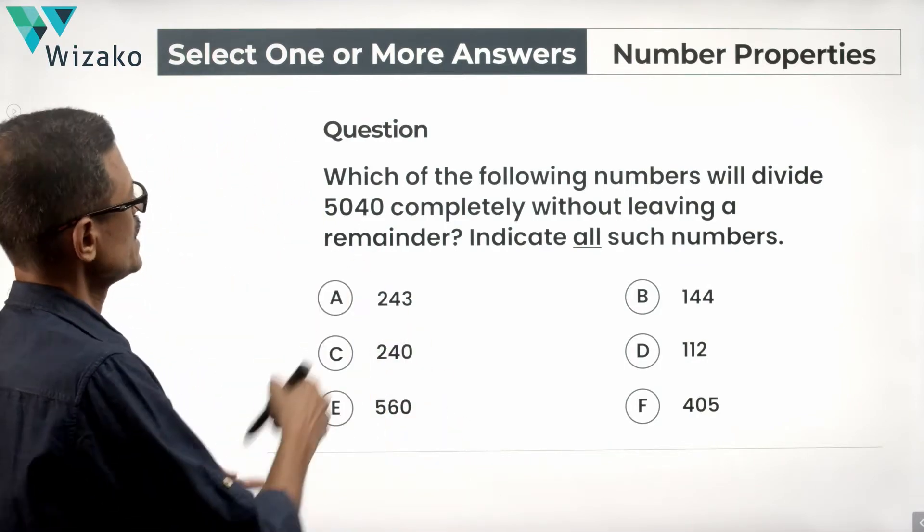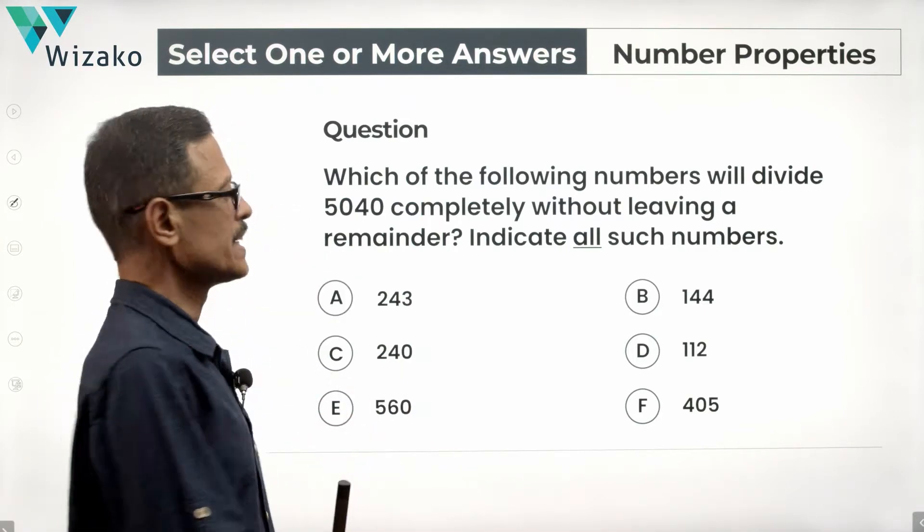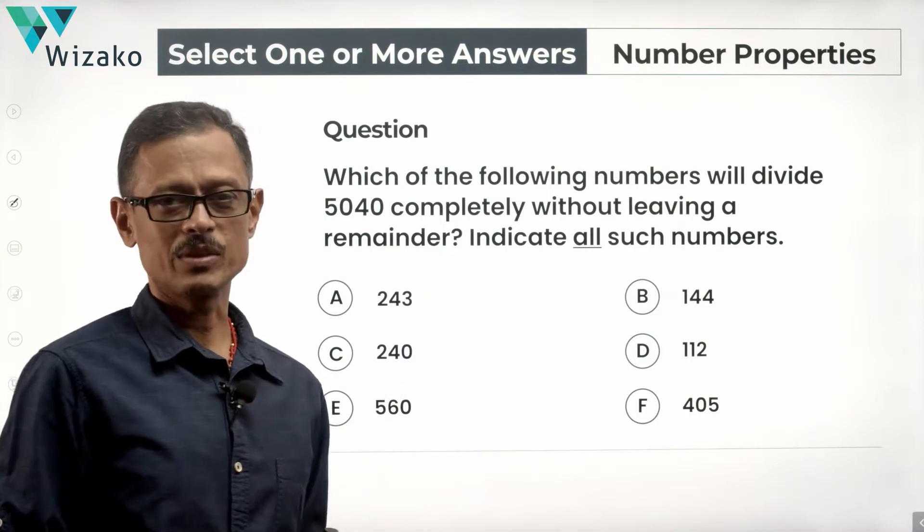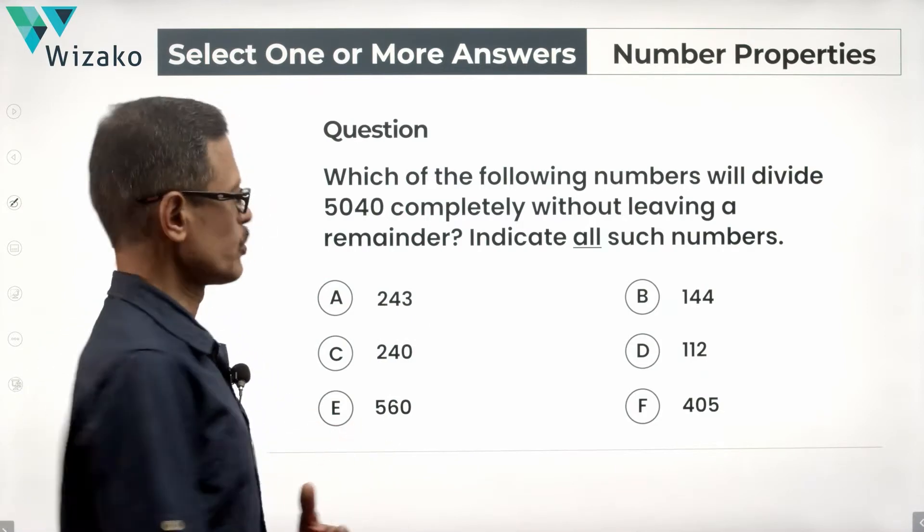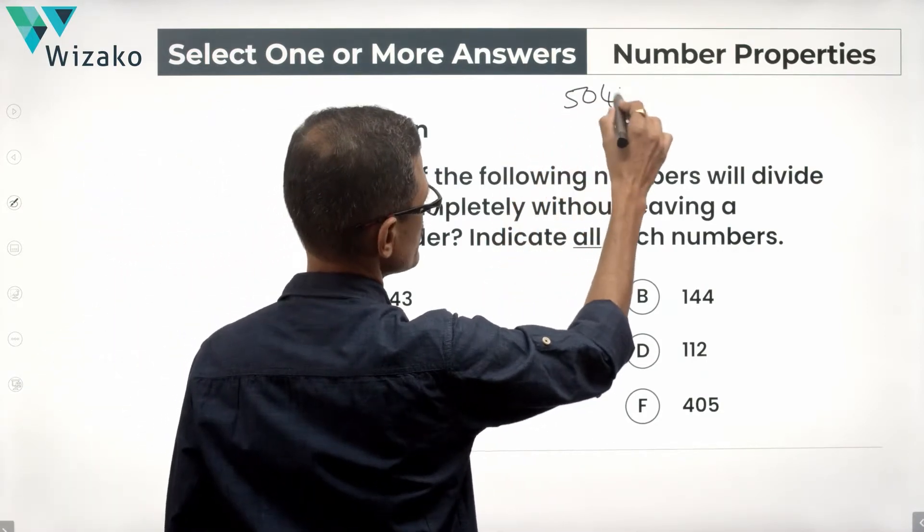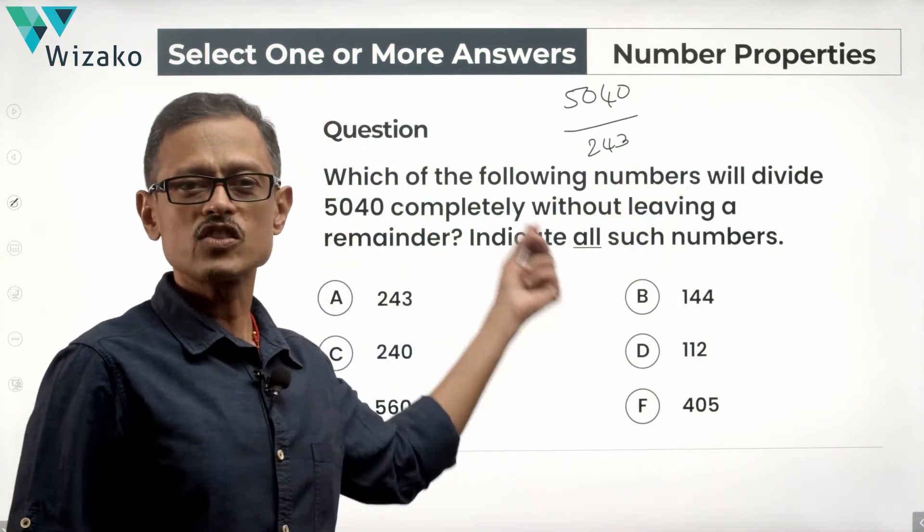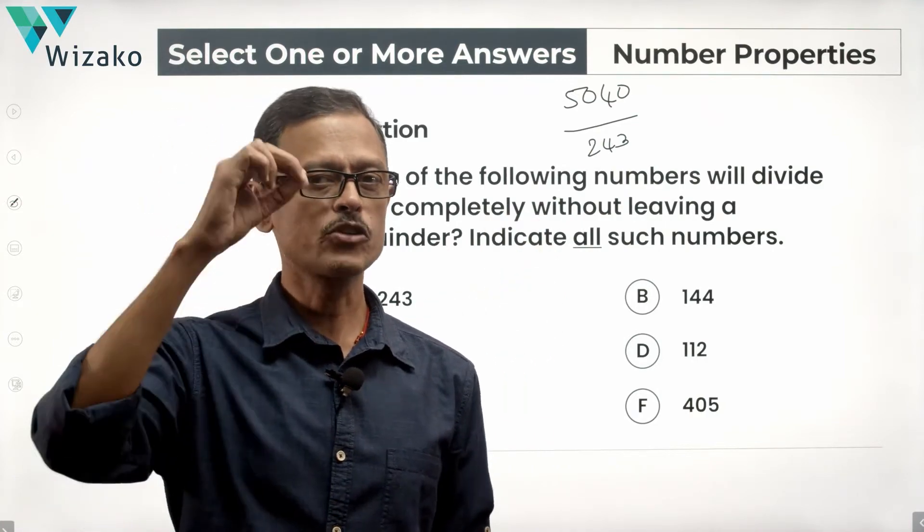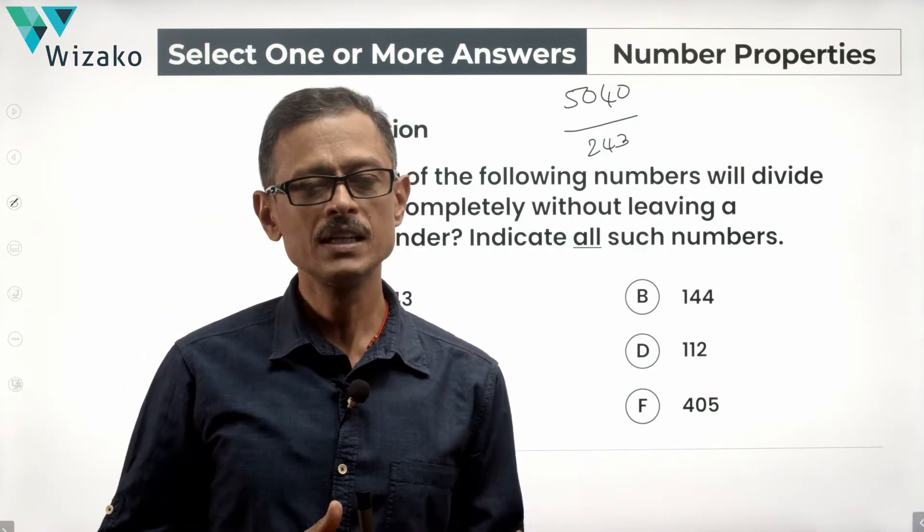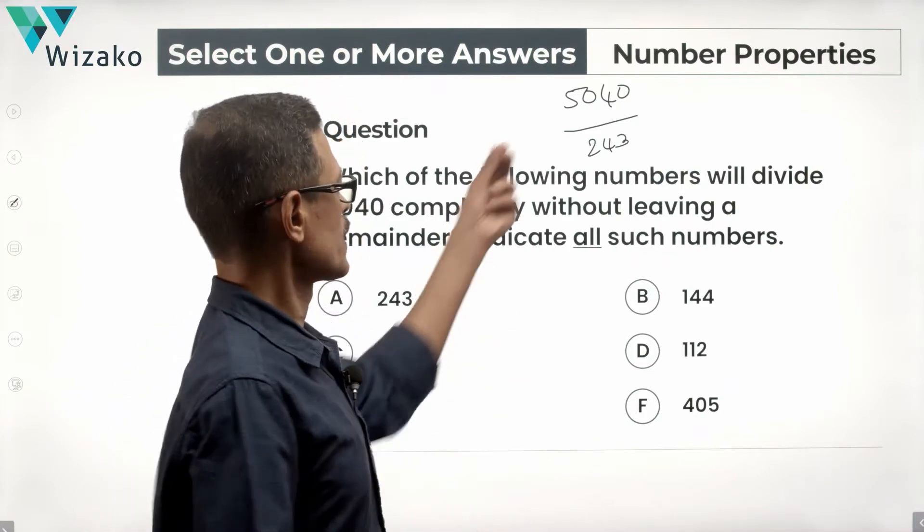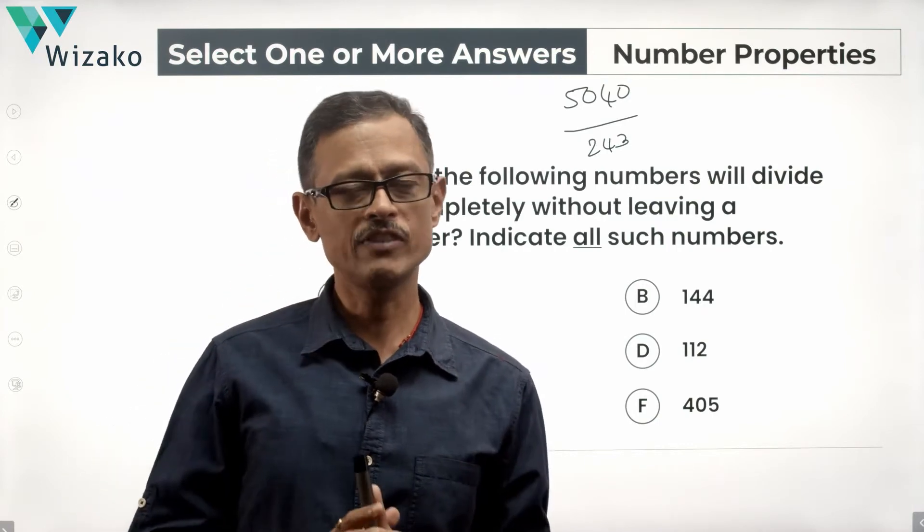Let's see how to go about it. Let's read the question first. Which of the following numbers will divide 5040 completely without leaving a remainder? Indicate all such numbers. What's the approach? If this number 243 divides 5040, then when we prime factorize 5040 and we prime factorize 243, all the prime factors found in 243 should be available, should be contained in 5040. In that case, 243 will divide 5040. If 5040 either does not have one of the prime factors found in this number or does not have it in adequate powers, then that number is not going to divide 5040.